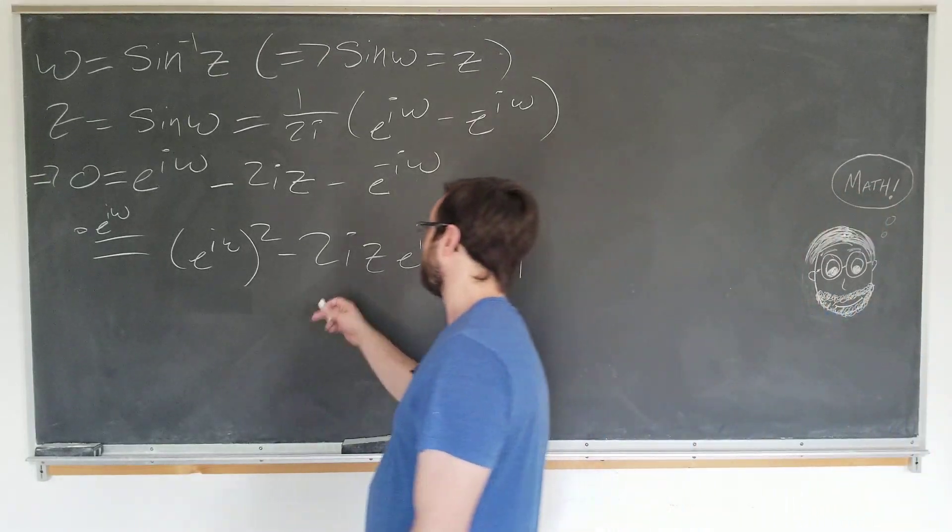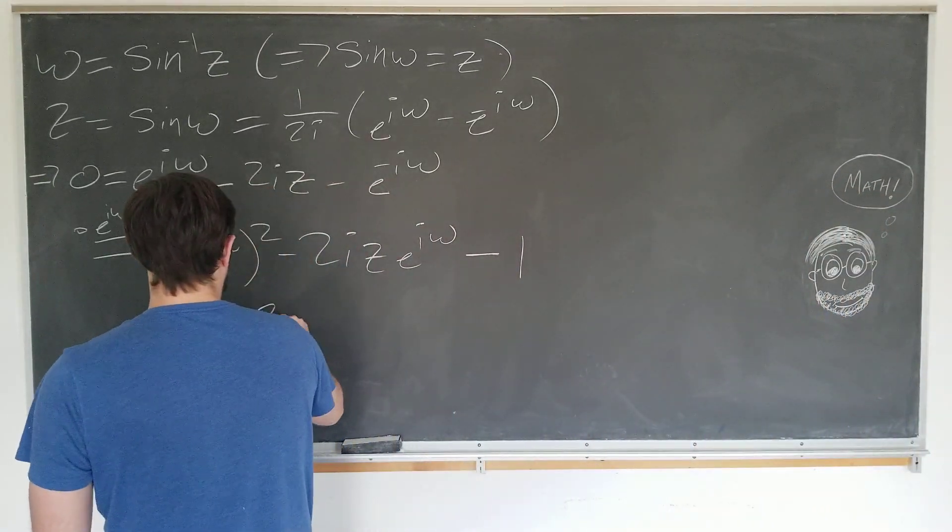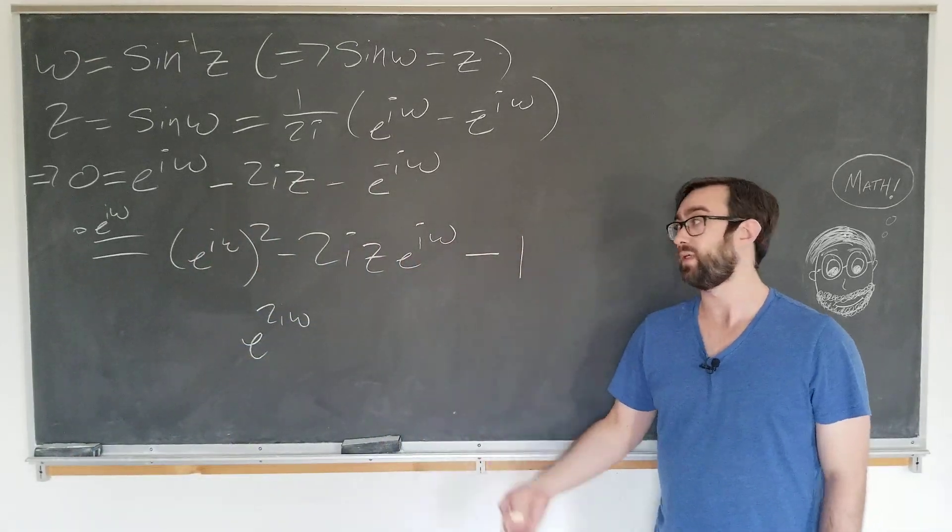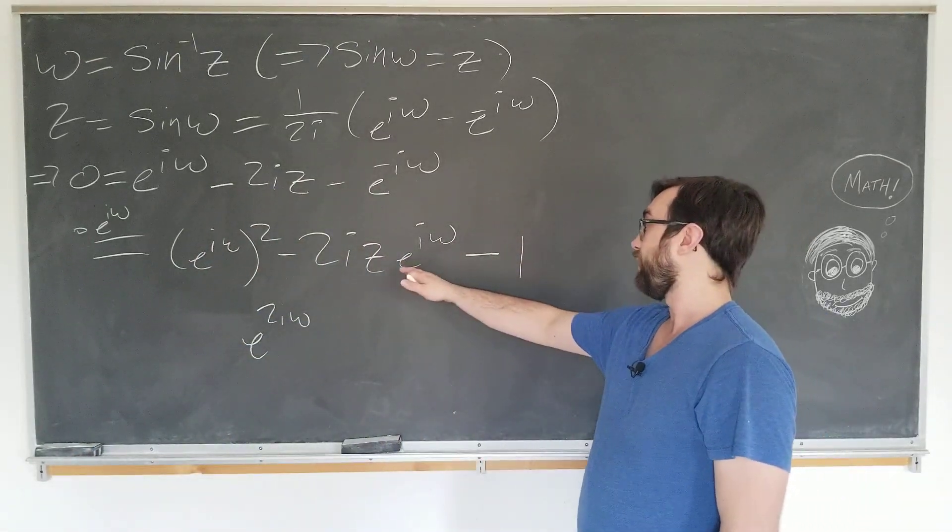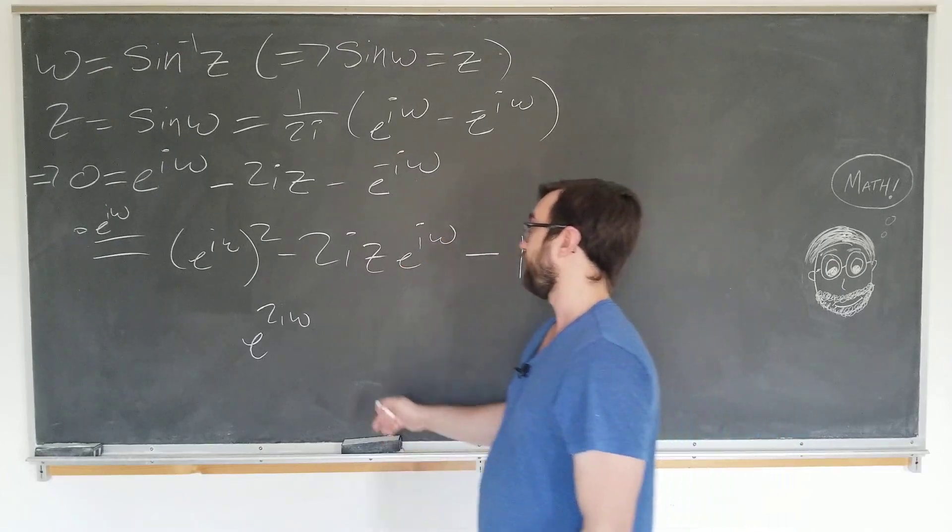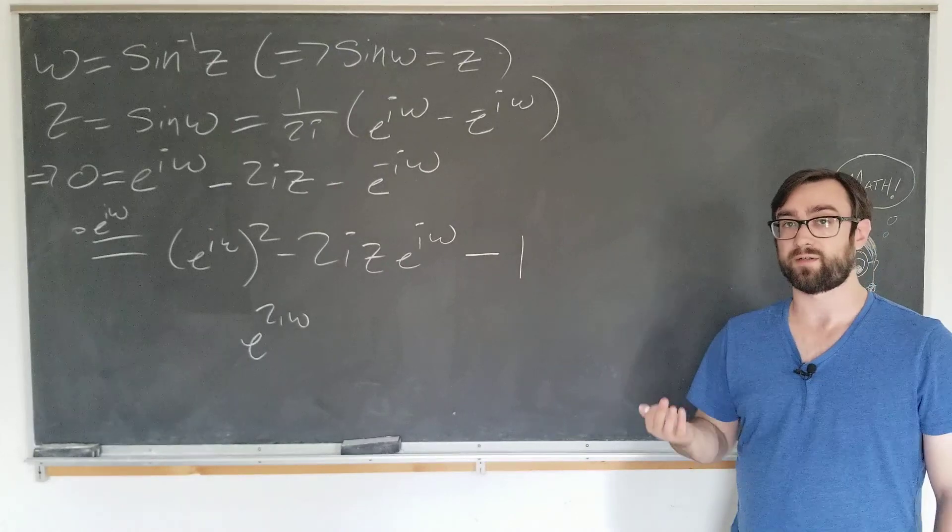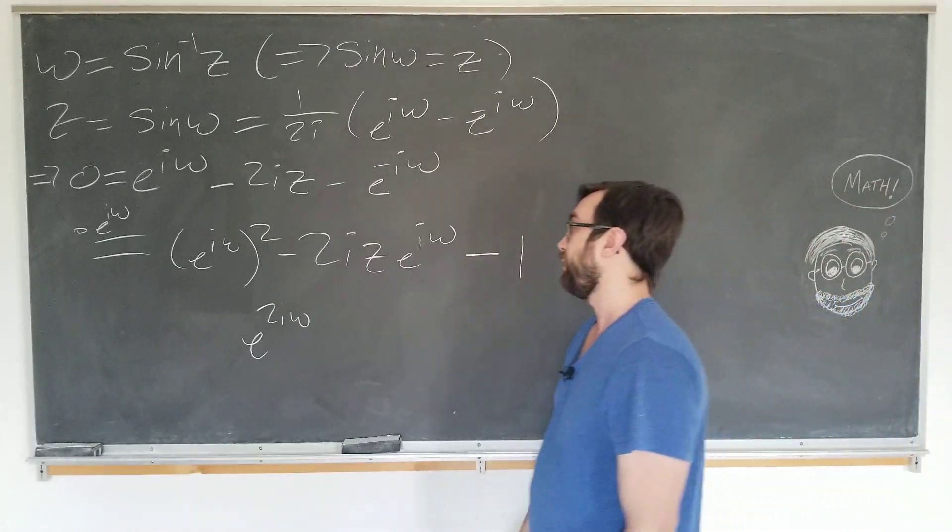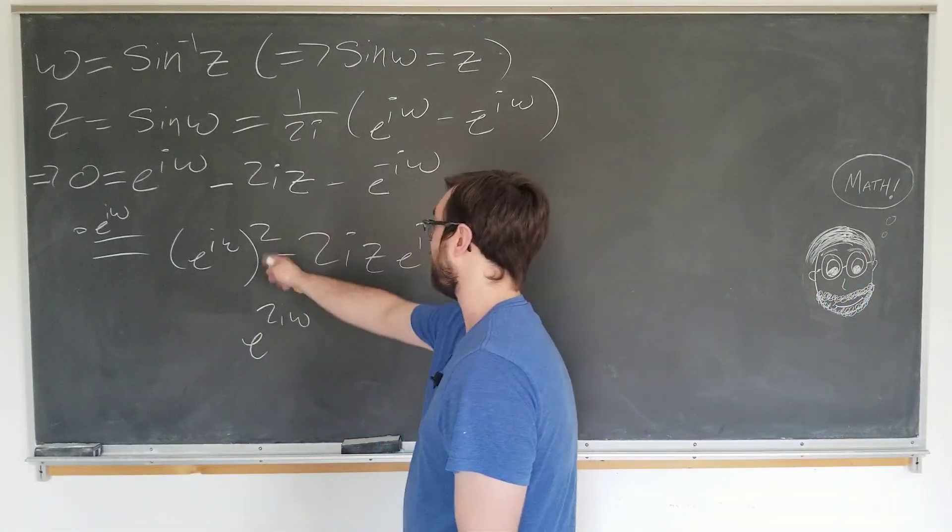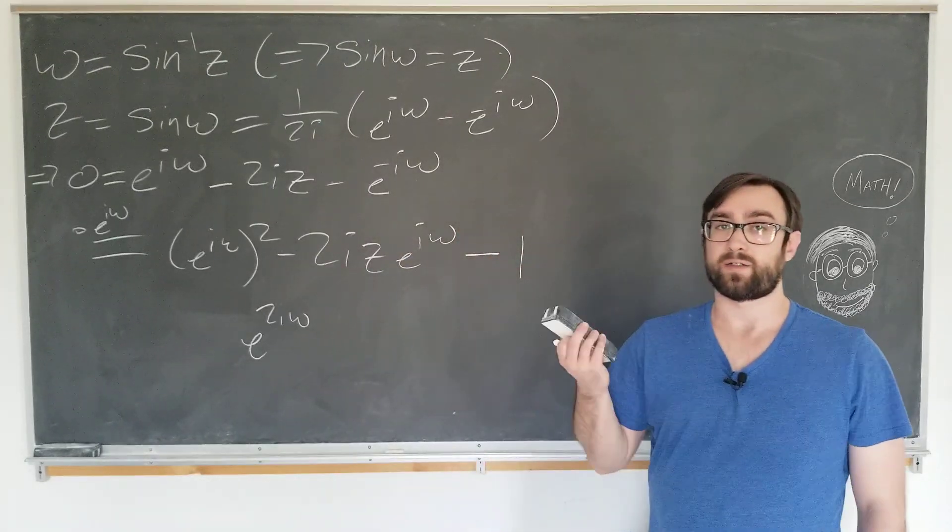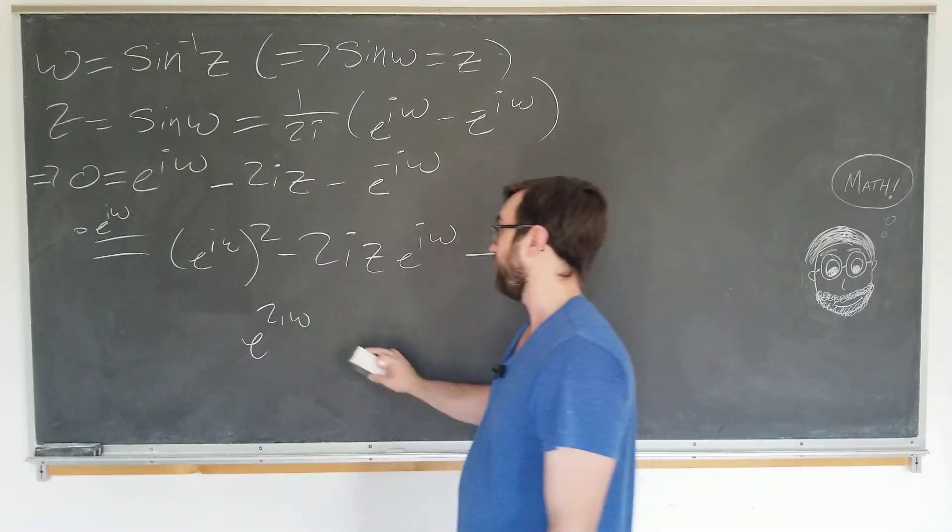Now I kept it in this form instead of writing e to the 2i w, since we can use the quadratic formula. This time around, we have a linear term. Last time, we only had this term and this term so we could solve it. It was a linear equation. But now we're going to have a quadratic equation. It's more difficult to solve this one.